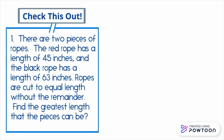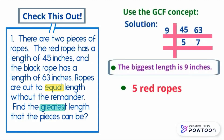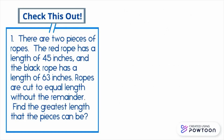How about the number of black ropes? Good thinking! There will be 7 black ropes, each 9 inches in length. How many equal pieces of rope are there in all? The total number of ropes is 12.